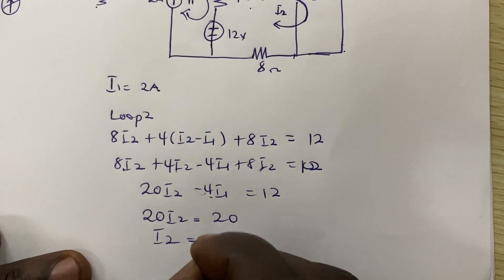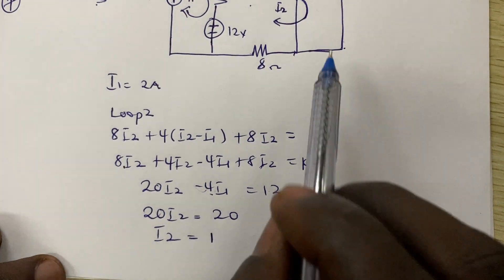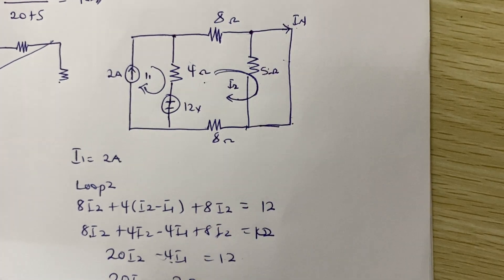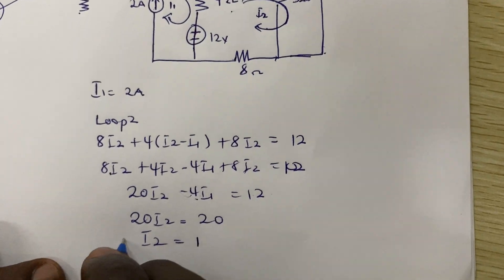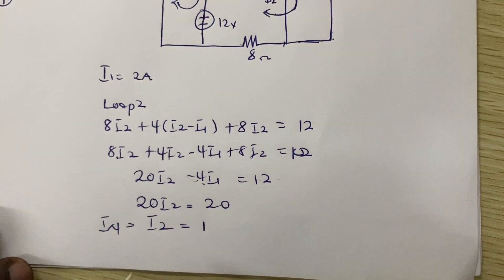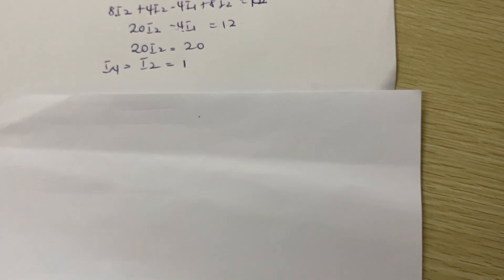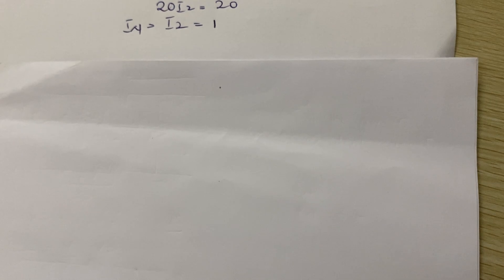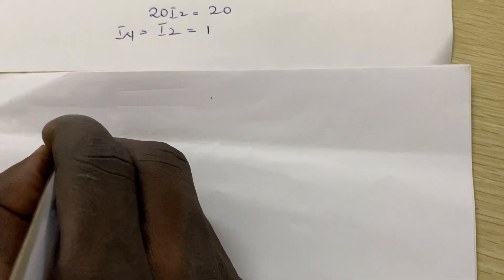Therefore I2 = 1 amp. Since I2 is the current flowing through the short-circuited terminals, In = I2 = 1 amp. Interestingly, for Thevenin we draw an equivalent circuit with the load resistance and Rth in series, but for Norton the equivalent circuit has the current source In in parallel.